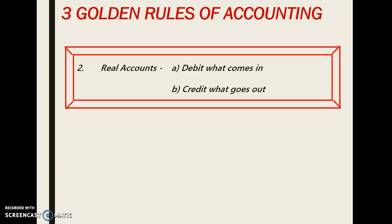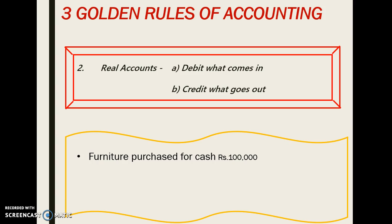The second golden rule of accounting is with respect to real account. Real account means all those assets such as land, building, plant and machinery, etc. The rule says: debit what comes in, credit what goes out. Real accounts normally have a debit balance — when we purchase some assets or any additions are made, it should be debited. Similarly, when it goes out from our organization or its balance reduces, we will credit it.